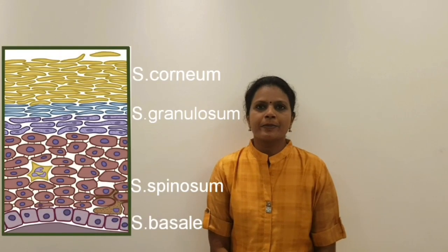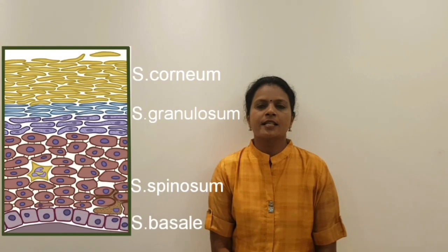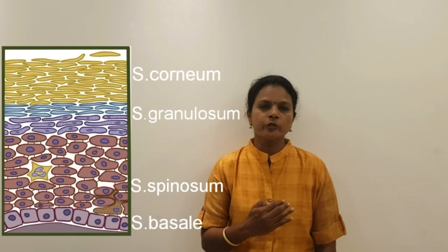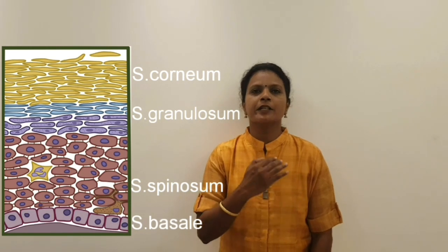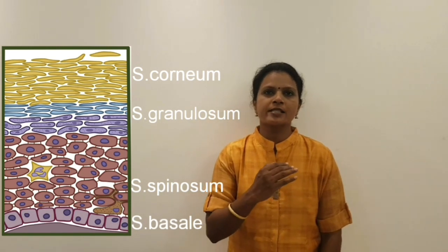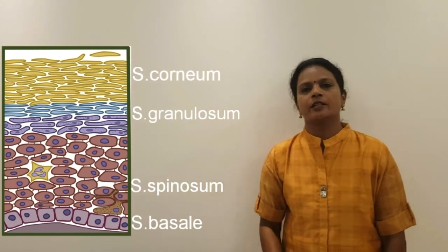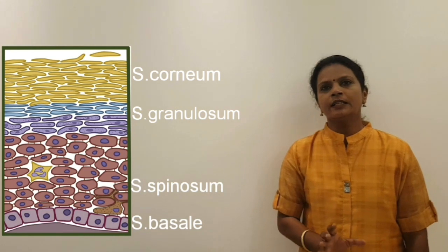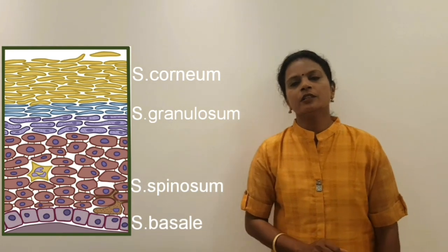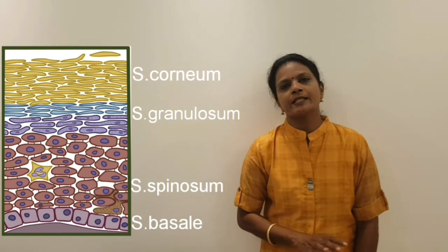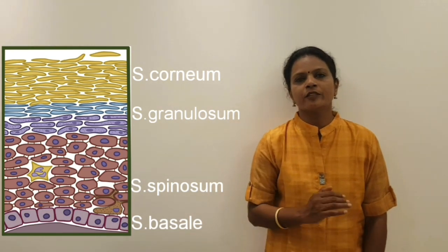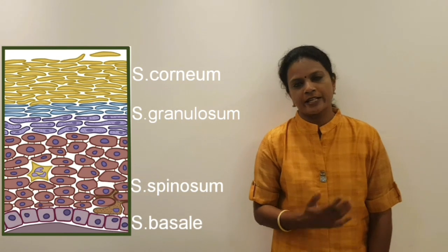In psoriasis, keratinization is affected. Usually, from the stratum basale, the cells move to stratum spinosum, stratum granulosum, and stratum corneum, and gradually shed off from the body. This is known as keratinization. Usually, 20% of the stratum basale cells undergo keratinization.